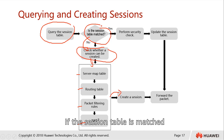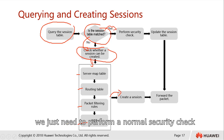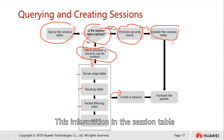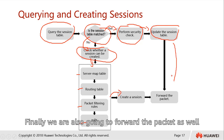If the session table was matched earlier, we just need to perform a normal security check and update the session table with the information. This information in the session table serves as historical information. Finally, the packet will also be forwarded.